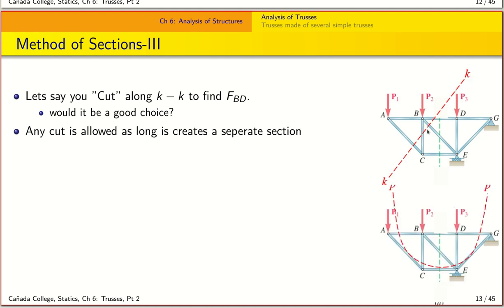The answer is it may not be a good choice but it is okay to make a cut like this because it creates a separate section. The reason it's not a good choice is because now you have four different unknowns in your calculation. Likewise, this is also acceptable, a cut like this where you have a curved cut, because you are essentially still creating a separate section.